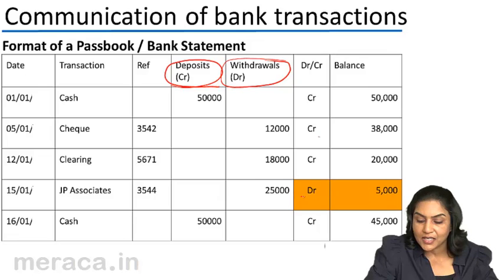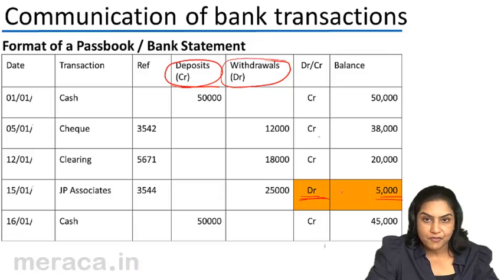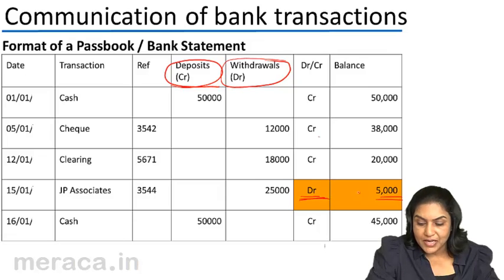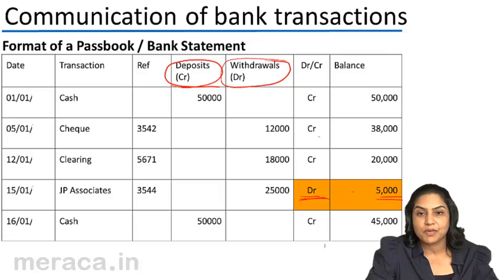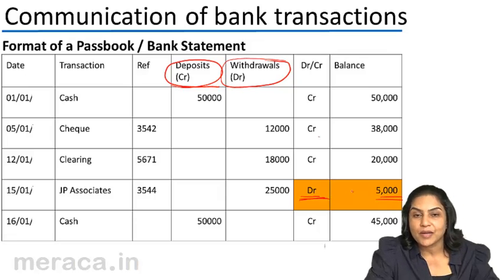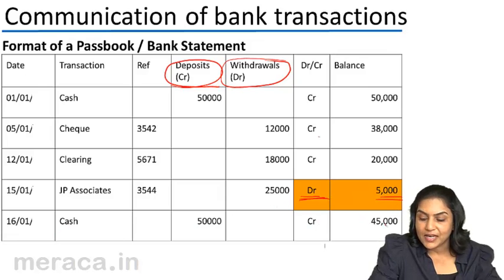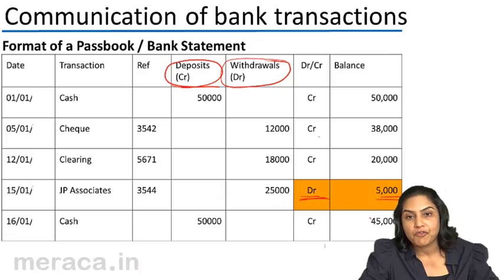This is indicated by a debit balance of 5,000, meaning that this is an overdraft — money has been overdrawn, and there have been more withdrawals than deposits. Sometimes the bank allows this facility, allowing its customer to overdraw the account and charges some interest. Subsequently, cash has been deposited and the balance is again a credit balance of 45,000.